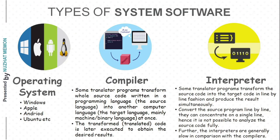Now let's look at the types of system software. There are three types. The first is the operating system, which is the most prominent example of system software. Some examples of operating systems are Windows, Apple, Android, Ubuntu, etc.